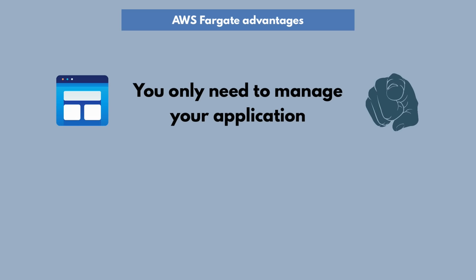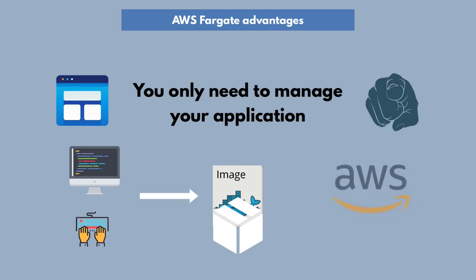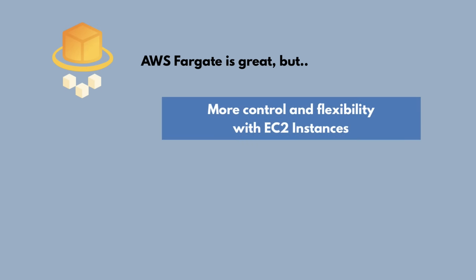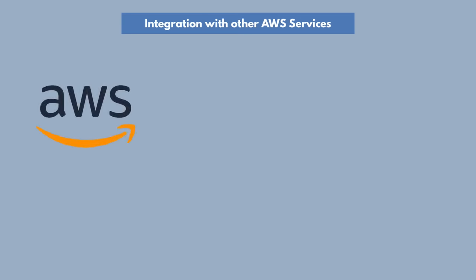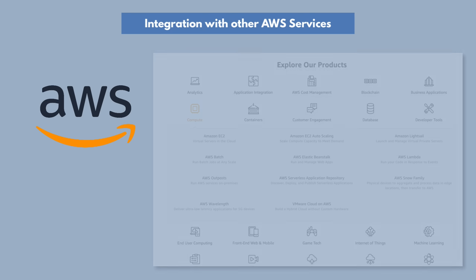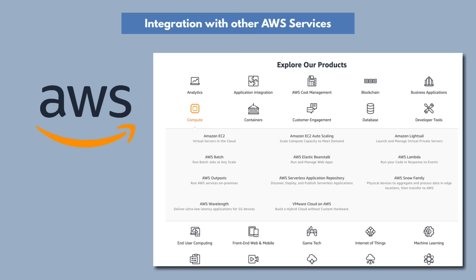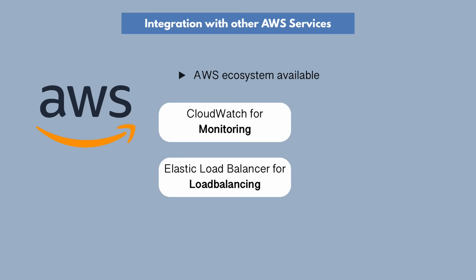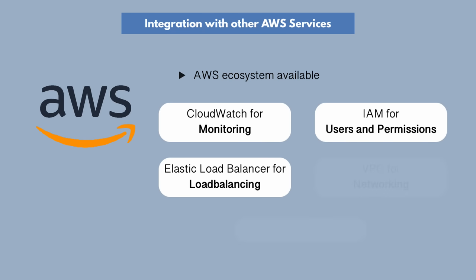So you now have your infrastructure managed by AWS using the Fargate service, and the containers scheduled through Fargate are also managed by ECS. You have multiple levels of your infrastructure and application being managed by AWS services. The only thing you have to worry about and manage is the actual application itself — you develop it, create containers, and deploy them on AWS infrastructure. If you need more access to the underlying infrastructure, you have that flexibility with EC2 instances. And running on AWS infrastructure gives you the advantage of integrating with the whole AWS ecosystem — CloudWatch for monitoring, Elastic Load Balancer for load balancing, IAM for permissions, VPC for networking, and so on.